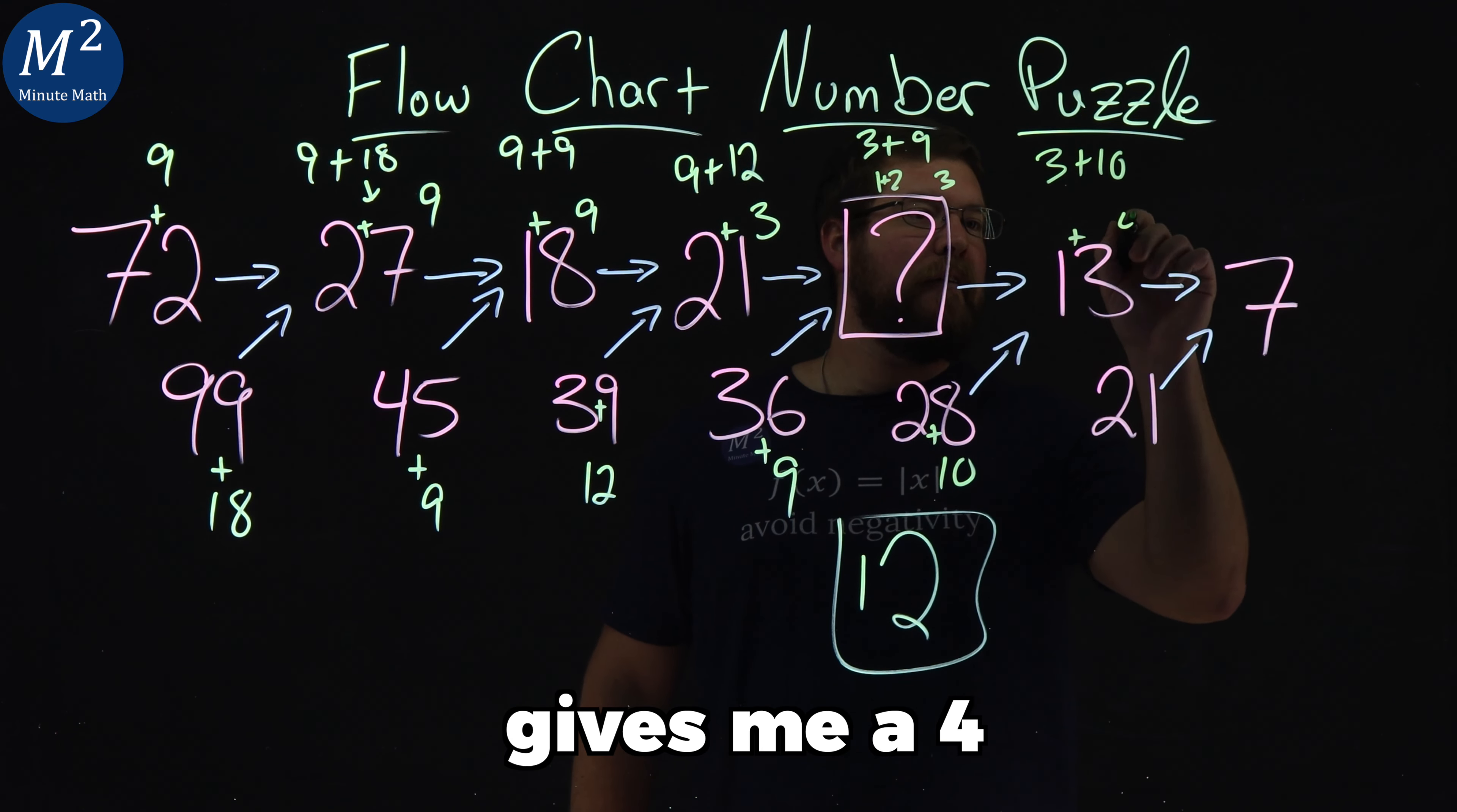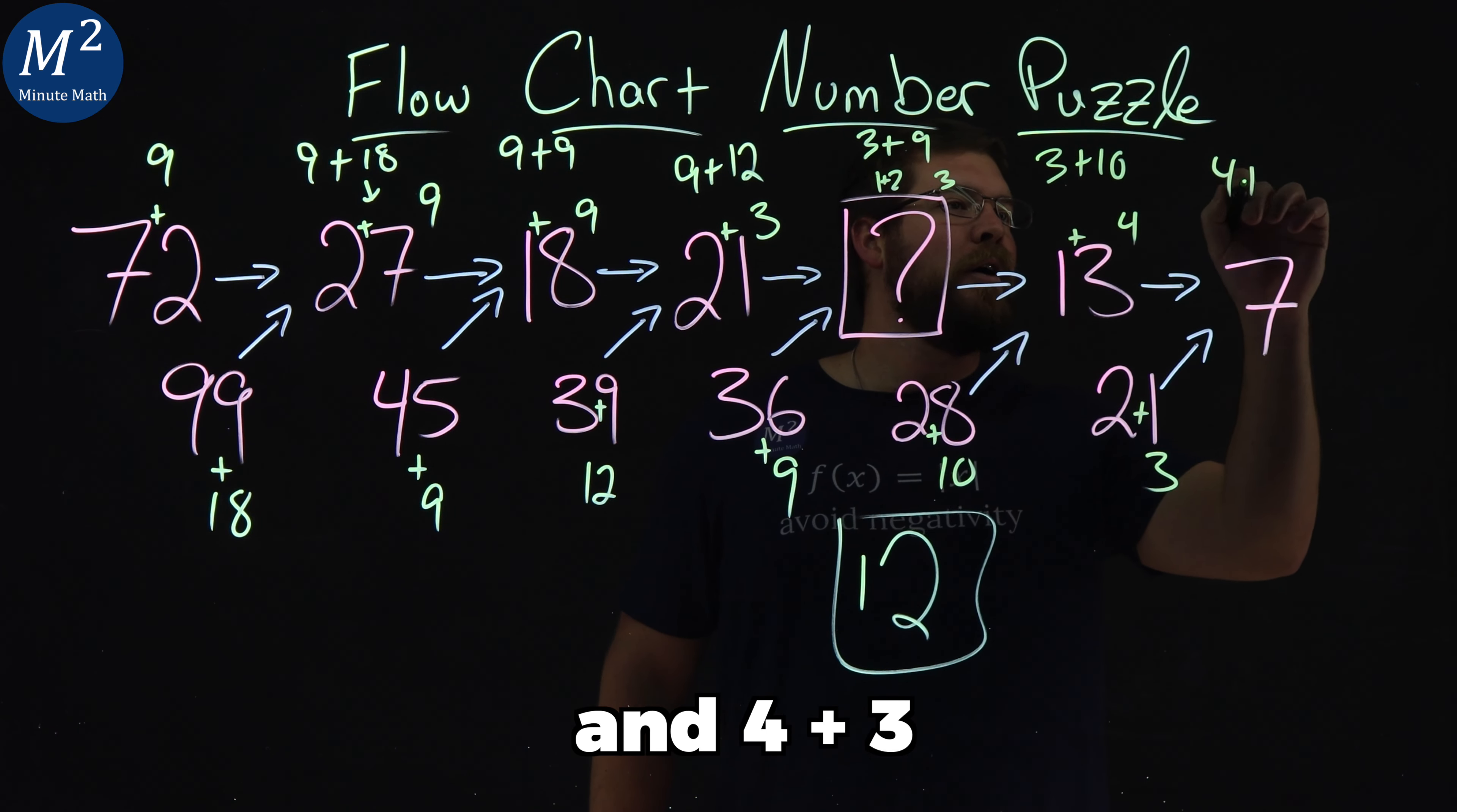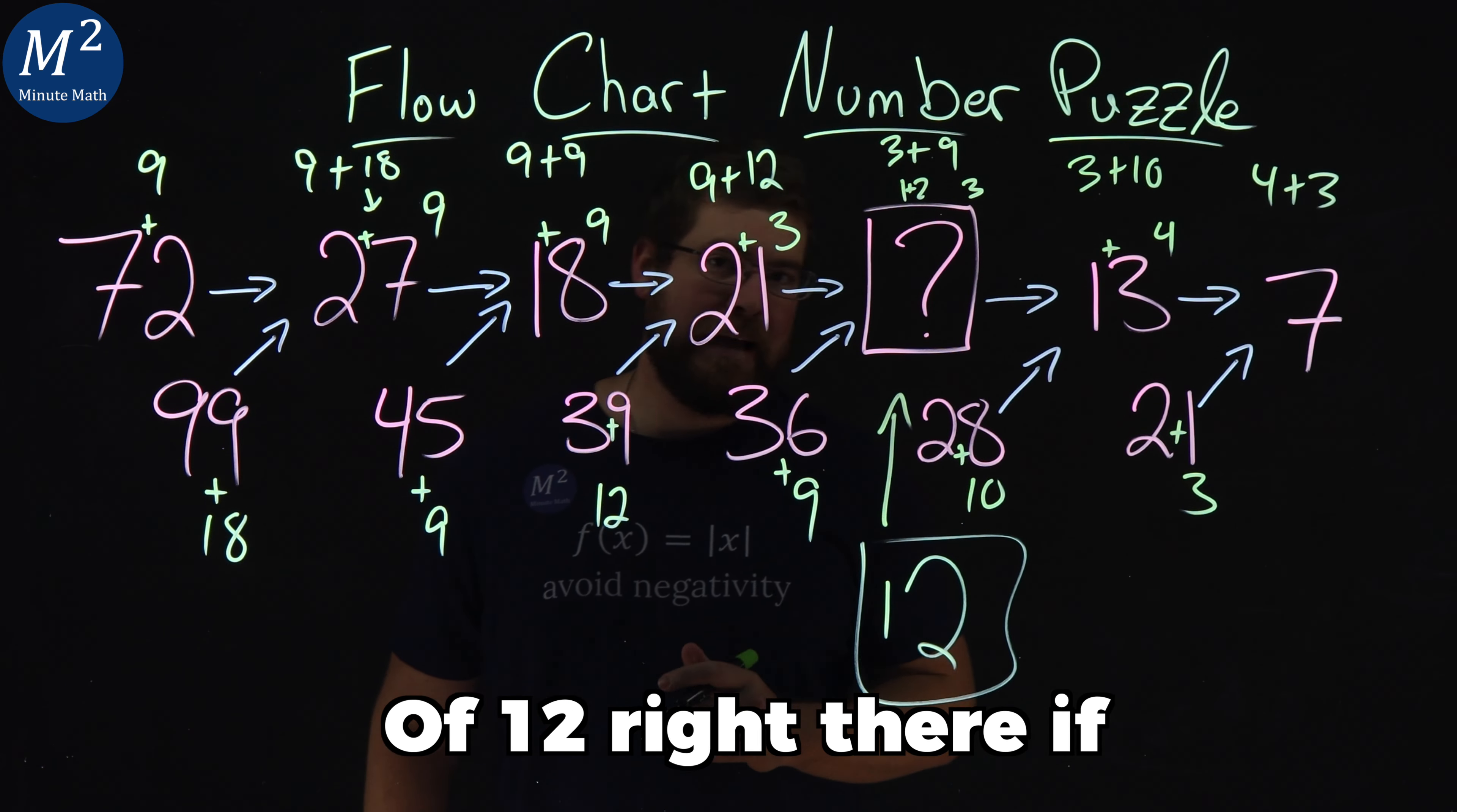1 plus 3 gives me a 4, 2 plus 1 gives me a 3, and 4 plus 3 is equal to 7. Confirming our answer of 12 right there.